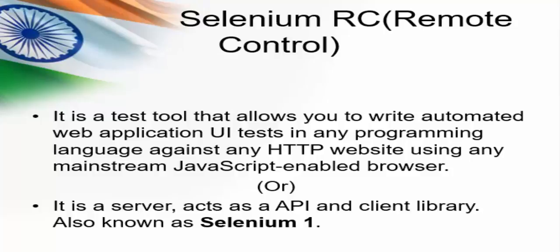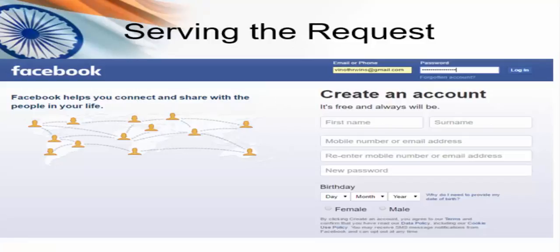You can see the definition here — in simple words, it is a server that acts as an API and client library. We can also call it Selenium 1. Now we will see what a server is, what its role is, and what a server does — it serves requests.